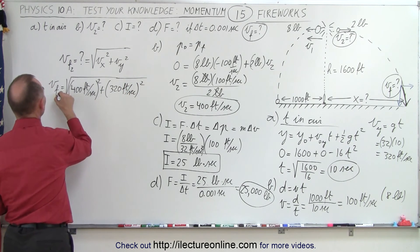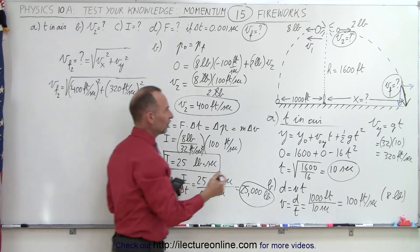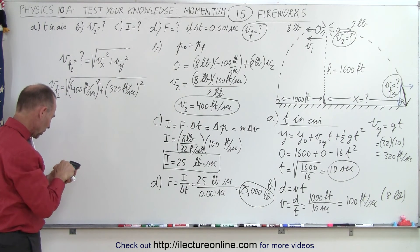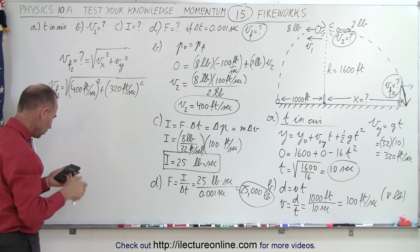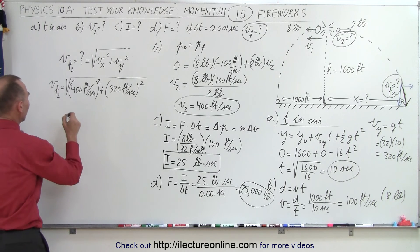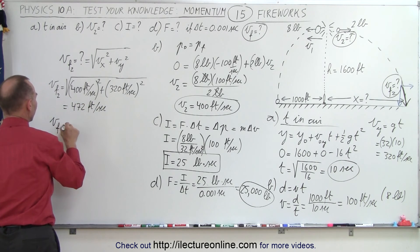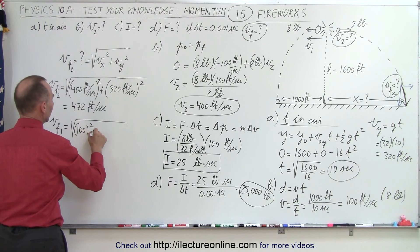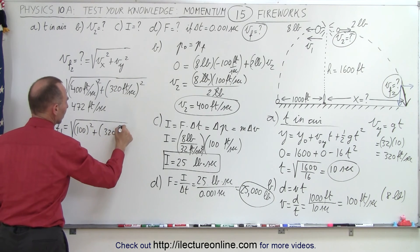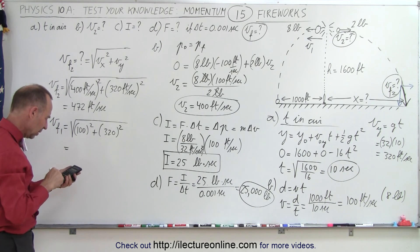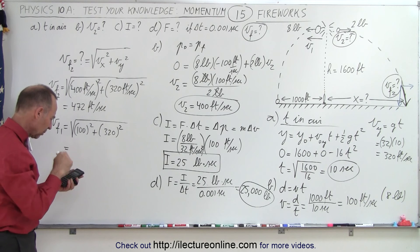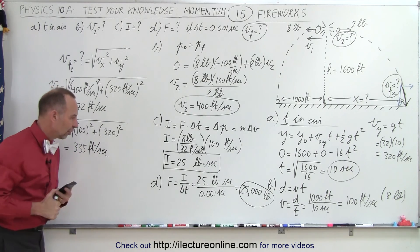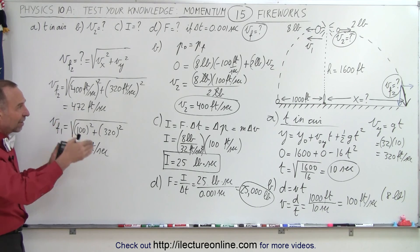V-final for the two-pound piece equals the square root of 400 squared plus 320 squared, which gives 472 feet per second. V-final for the first object, the eight-pound piece, is the square root of 100 squared plus 320 squared, which equals 335 feet per second. Those are the final impact velocities for both pieces as they reach the ground.